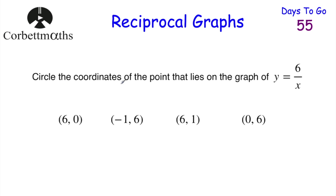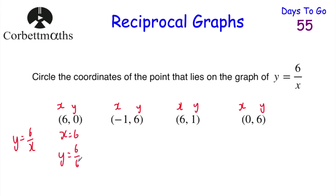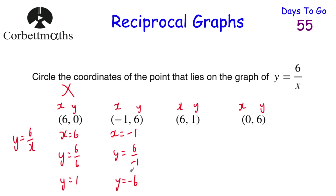We've been asked to circle the coordinate that lies on the graph of y equals 6 over x. Remember, with coordinates the first number is the x and the second number is the y — along the corridor, up the stairs. So if we substitute the x values into the equation, we'll see which one works. If x equals 6, then y equals 6 over 6, which is 1 — so the point would be (6, 1), not (6, 0). So that first coordinate does not lie on the graph. Next, if x equals negative 1, y equals 6 divided by negative 1, which is negative 6 — so the point is (negative 1, negative 6), not (negative 1, 6). So that one doesn't lie on the graph either.